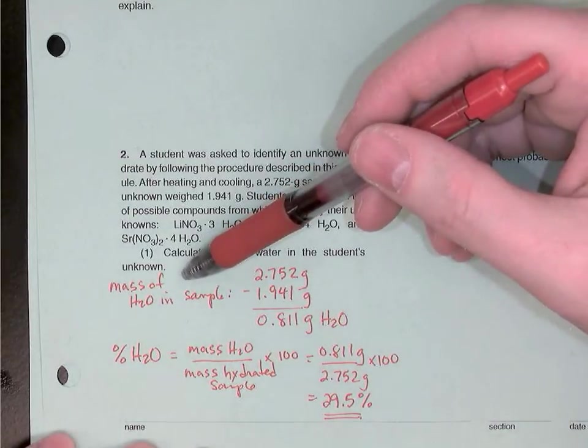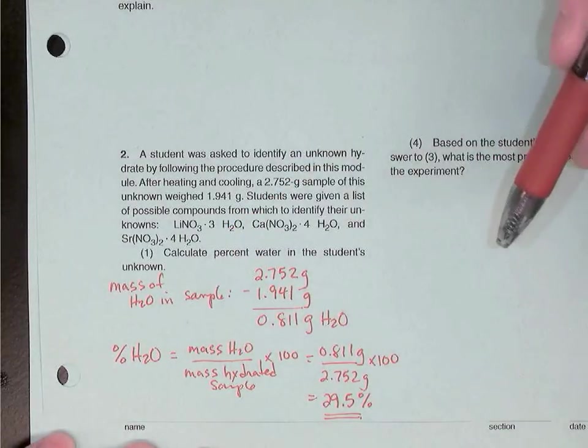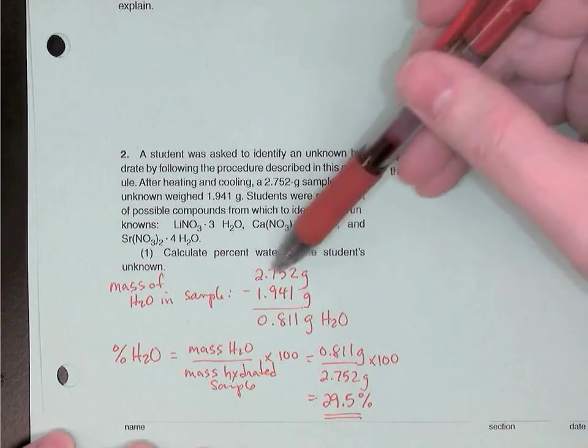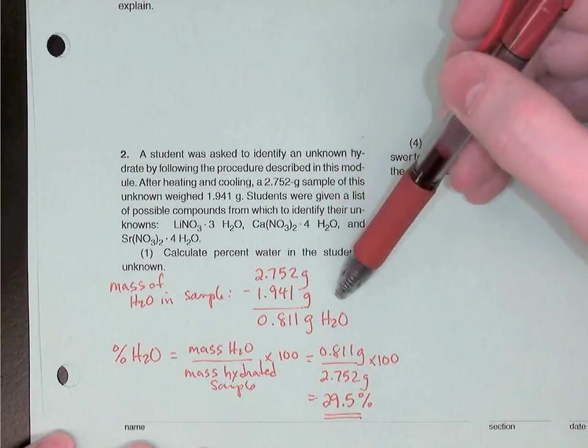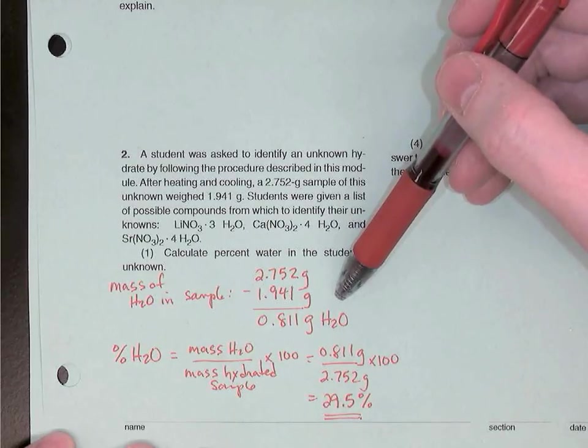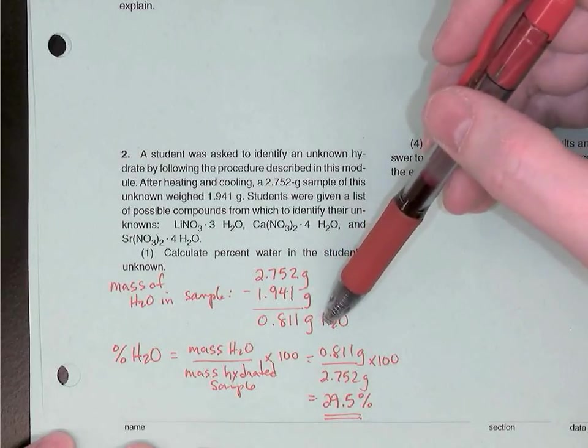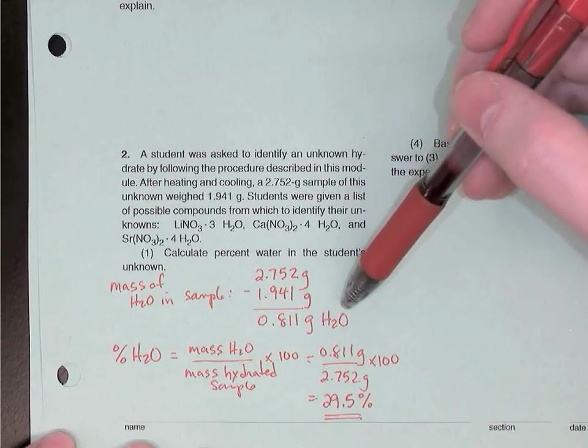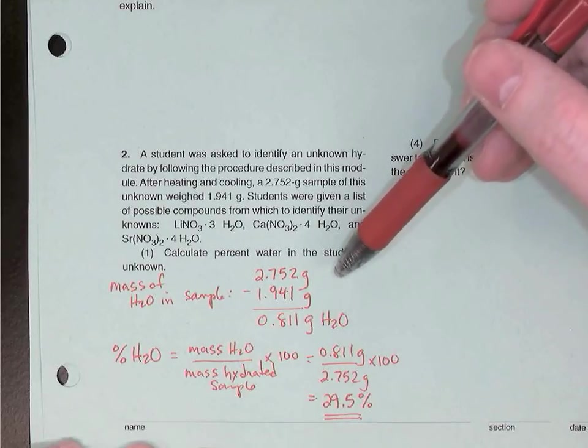The first thing I'm doing is finding the mass of water in the sample. So to do that, I took the mass of the hydrated salt and subtracted the mass of the anhydrous salt after heating. So the difference is the mass that was lost, which was water. So 0.811 grams of water.